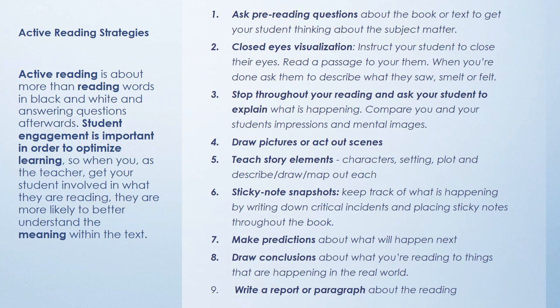Stop throughout the text and ask your student to explain what is happening. Draw pictures if that's helpful, or act things out. Teach story elements. A strategy called sticky notes snapshot involves writing down what happened at critical points in a story, book, or article so you don't lose track of important elements. Review predictions and draw conclusions. Writing a brief report or paragraph summarizing what was read is also a valuable active reading and comprehension strategy.